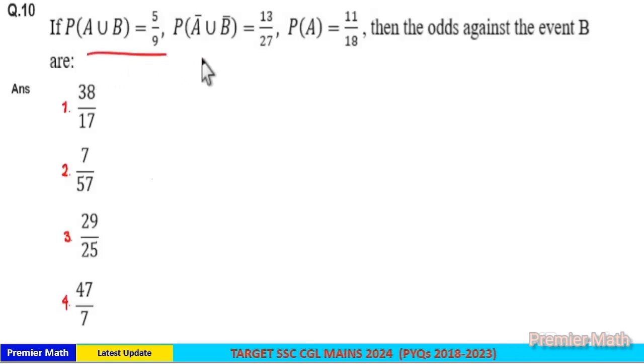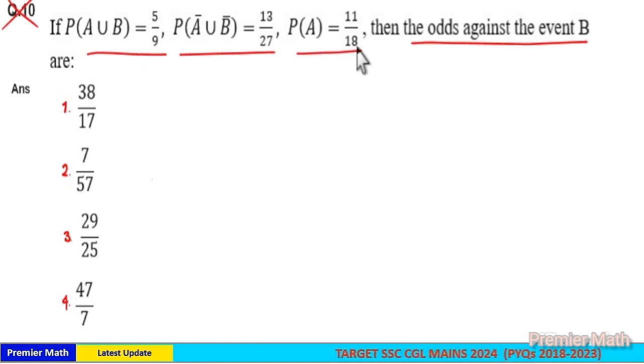If P(A ∪ B) = 5/9, P(A' ∪ B') = 13/27, P(A) = 11/18, then the odds against the event B are: Technically this question is wrong because union of elements should be greater than or equal to its individual elements. Here A ∪ B is less than A. So technically this question is wrong, but we can solve this answer using these values.